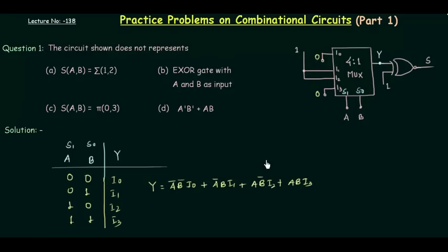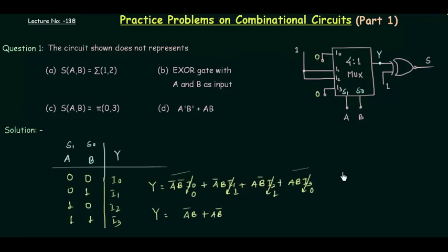Replacing the values: i0 is 0, i1 is 1, i2 is 1, and i3 is 0. So y = a'b + ab'. The first and last min terms are neglected since AND with 0 gives 0, and AND with 1 preserves the entity. Now, from logic gates, a'b + ab' is equal to a XOR b. So this is the value of y, and now we can find the value of s.